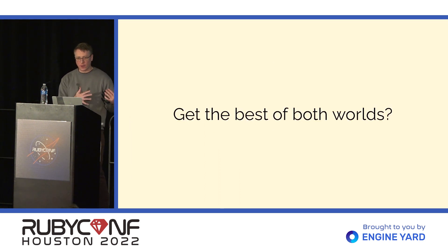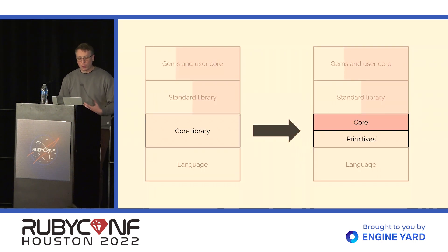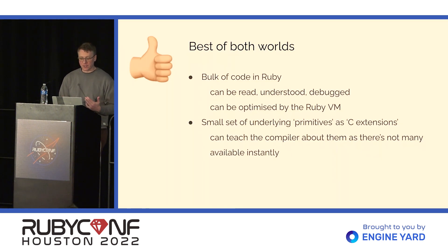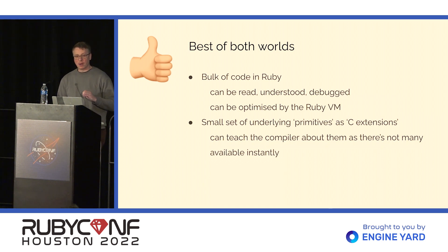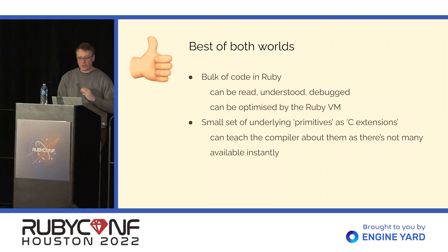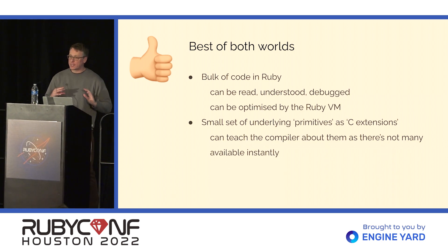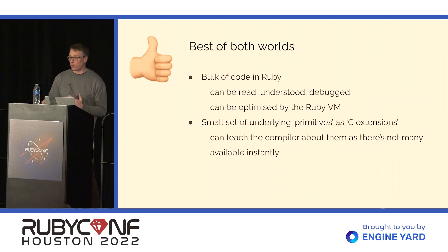Can we get the best of both worlds — the best of the advantages without some of the disadvantages? What we're talking about doing is taking that core library part of the tower and splitting it into two parts: one we'll call the new core library implemented in Ruby, sitting on top of a smaller set of primitives implemented as they currently are in C, or in Java in something like JRuby or TruffleRuby. Split it into core and primitives. This should give us the best of both worlds. We'd have the bulk of our code in Ruby — we're Ruby programmers, we like seeing code in Ruby, we can understand it. It also means it can be better optimized by the VM. We're building things like YJIT to optimize Ruby code, so the more Ruby code it can optimize, the better. We'd have a small set of underlying primitives implemented the same way as C extensions, and then we can teach the compiler specifically about them because there's a smaller set.